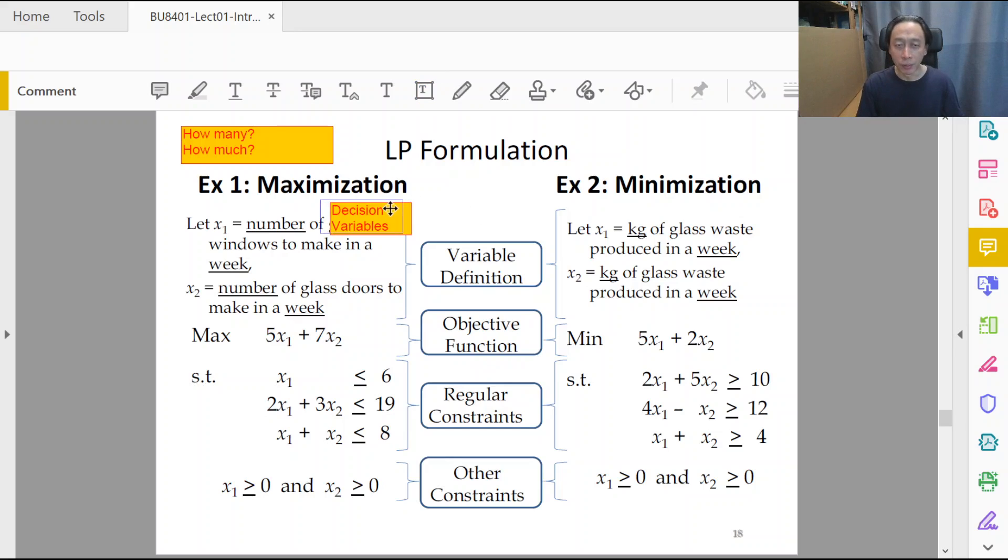They are called decision variables. They are not algebraic variables in the sense that you solve for them with some kind of equation. Rather, they are variables whose values are to be searched and determined in the space that will be constrained or limited by all the inequalities, the regular constraints and other constraints.